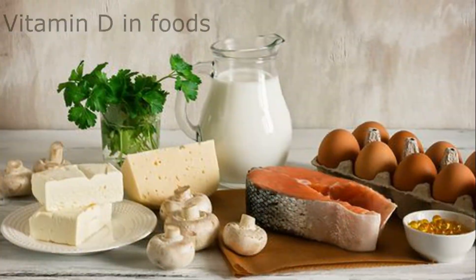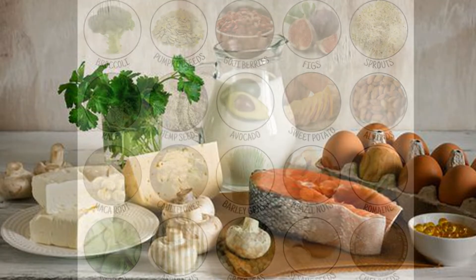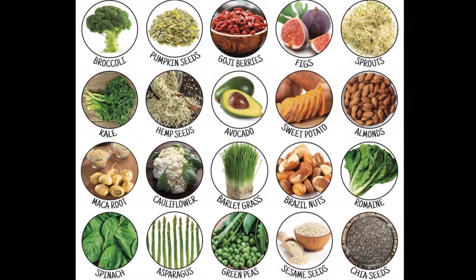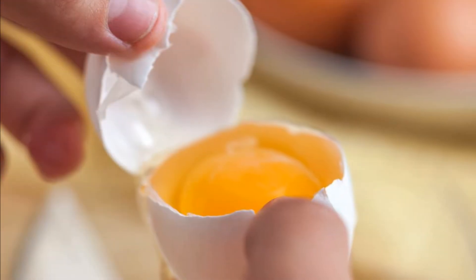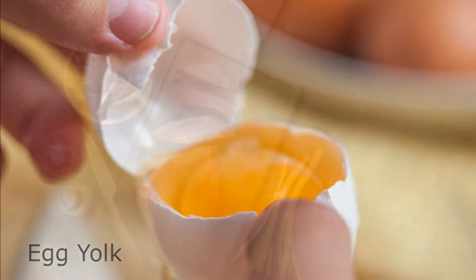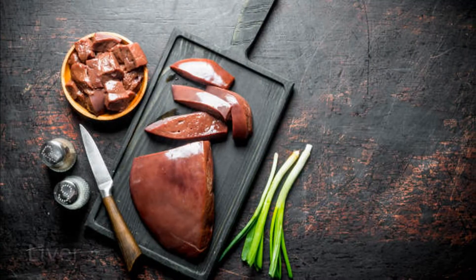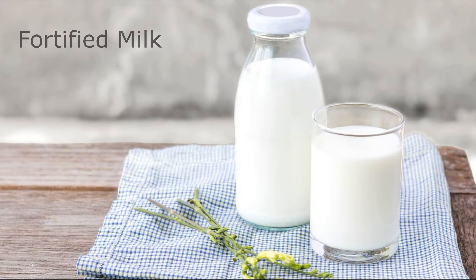Most foods have negligible amounts of vitamin D. Most plant foods are poor sources of vitamin D. Some foods of animal origin like egg yolk, liver, fatty fish, butter, and fortified milk provide variable amounts of the vitamin.